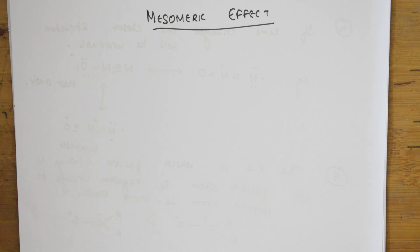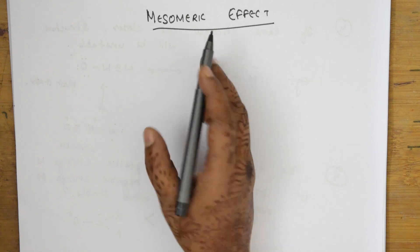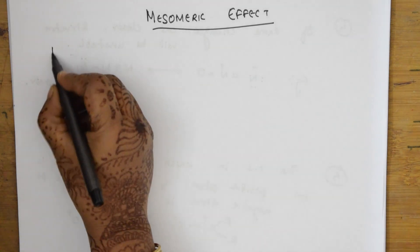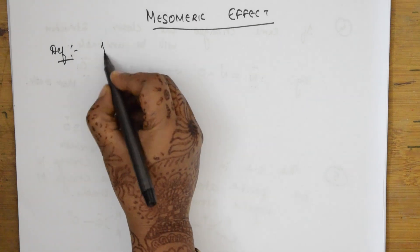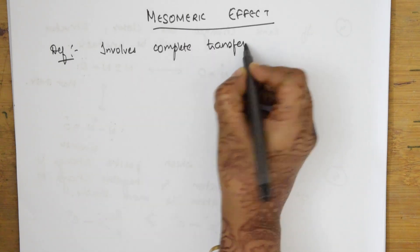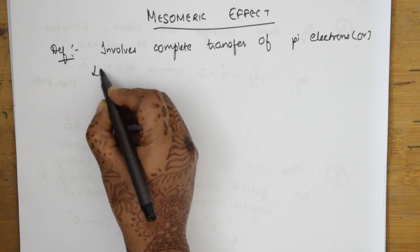In today's topic we are going to learn about mesomeric effect. Whenever you are learning a concept, the first important thing is to write the definition — if you know the definition then you can follow it with examples and types. So mesomeric effect involves complete transfer of pi electrons or lone pair of electrons.